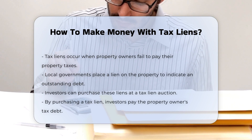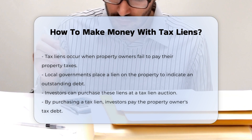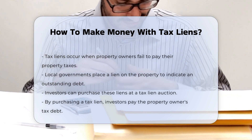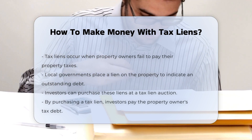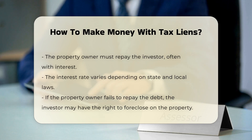Investors can purchase these liens at a tax lien auction. By purchasing a tax lien, you are paying the property owner's tax debt. The property owner must then repay you, often with interest. This interest rate can vary depending on the state and local laws.